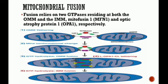Fusion starts with the docking of two MFN1 molecules in trans, likely through the HR2 domain. This association induces a conformational change that drives GTP hydrolysis by the MFN1 molecule, leading to the fusion of the two outer mitochondrial membranes.